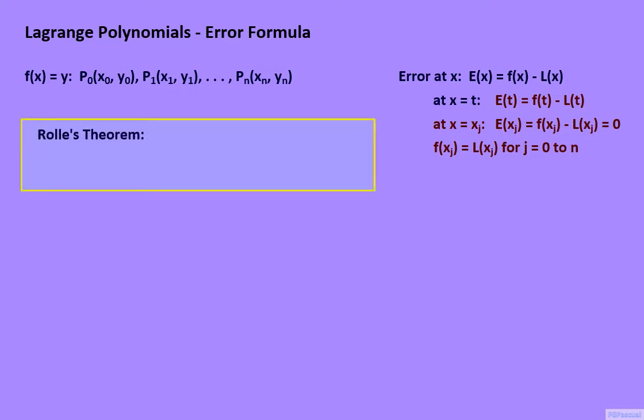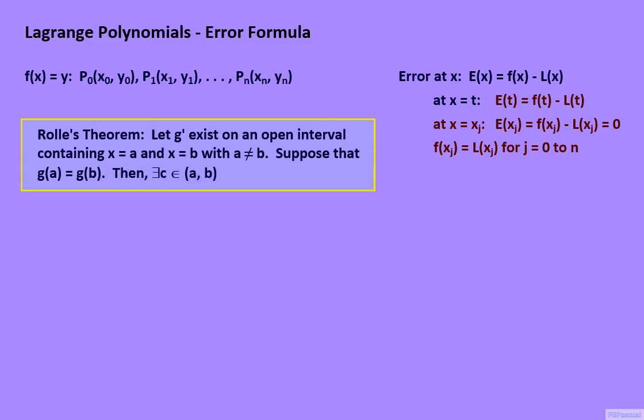To continue with the derivation for the formula of E(t), we first cite a theorem which will play a major role in our calculations. The theorem is called Rolle's theorem. Let g' exist on an open interval containing x = a and x = b with a ≠ b. Suppose that g(a) = g(b). Then there exists a value c between a and b such that g'(c) = 0.